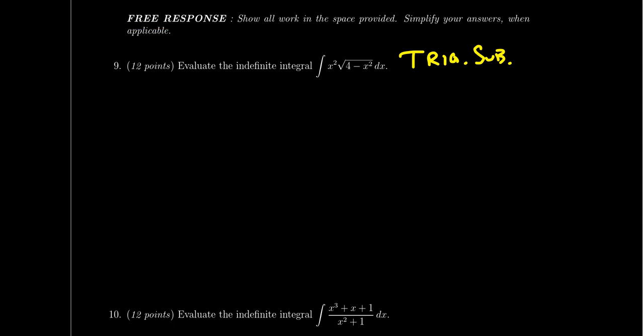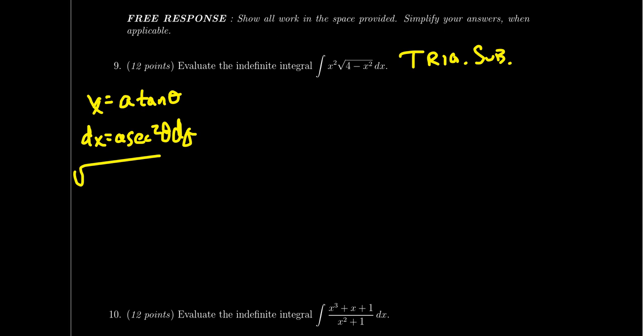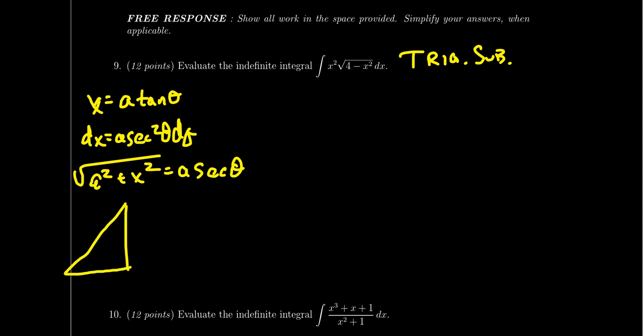To show your work, you could state the trigonometric substitution you're using — for example, if it's a tangent substitution, you'd write x equals a times tangent(θ), then dx equals a·sec²(θ)dθ. You can also note that the square root of a² plus x² equals a·secant(θ). You can draw the triangle if you want — not necessary, but one way to show your work. With a tangent substitution, you might write x/a and the square root of x² plus a².